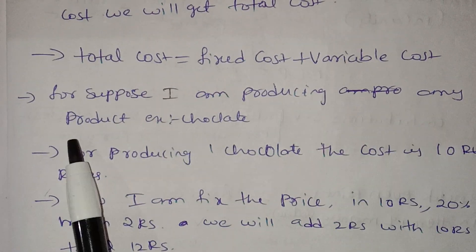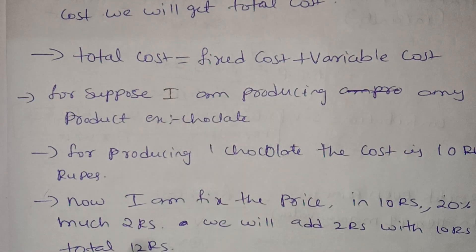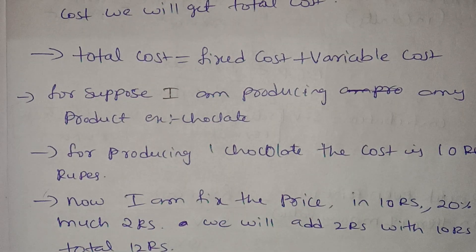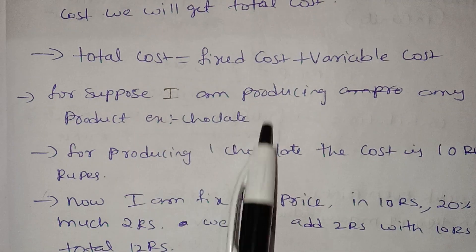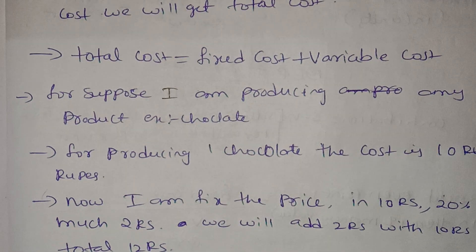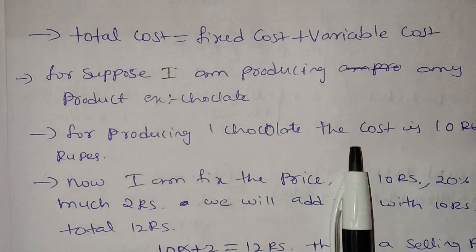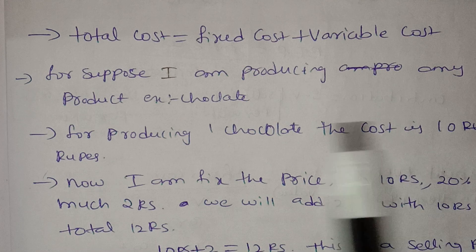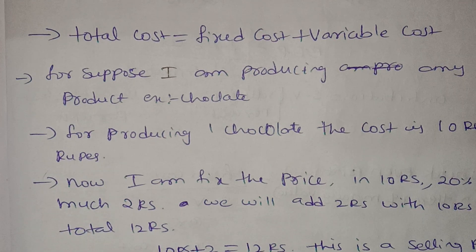For example, for producing one product — say a chocolate — the cost is 10 rupees.